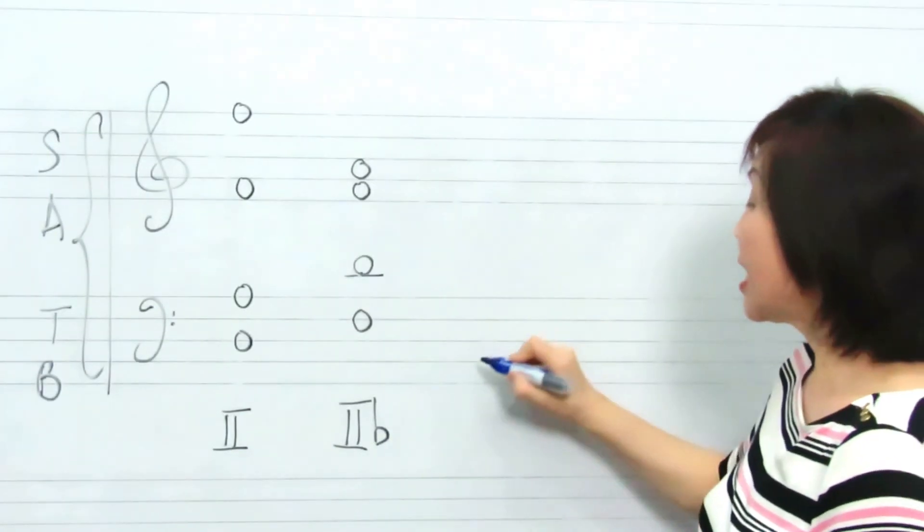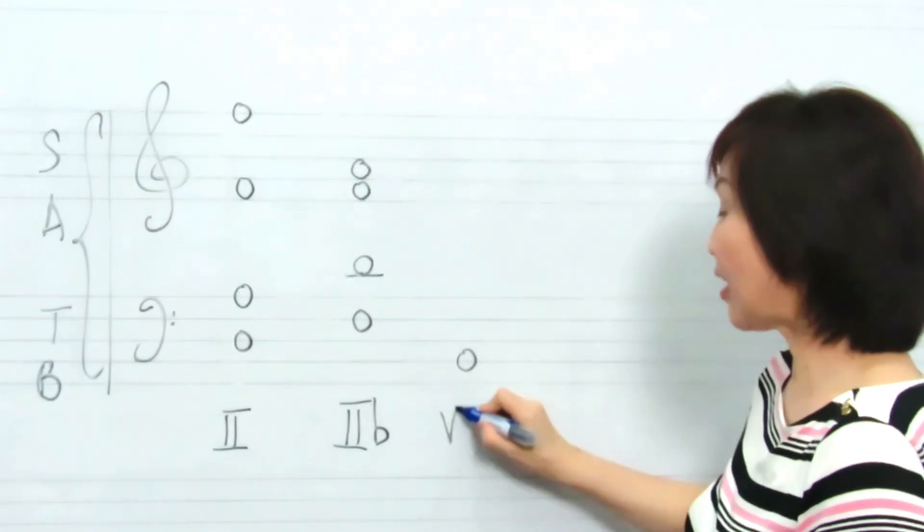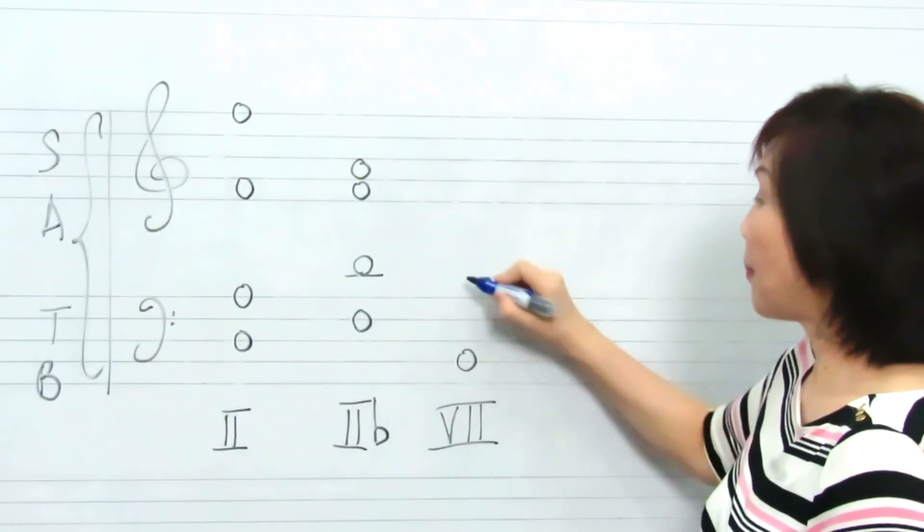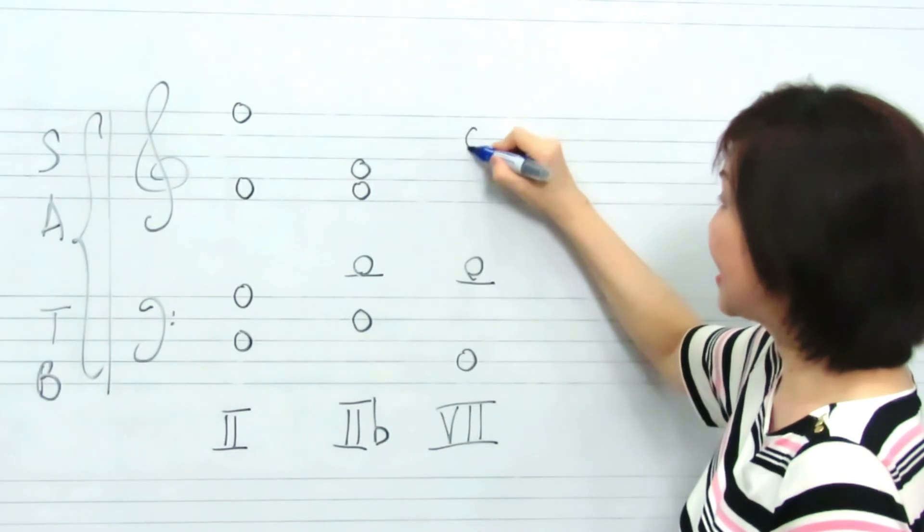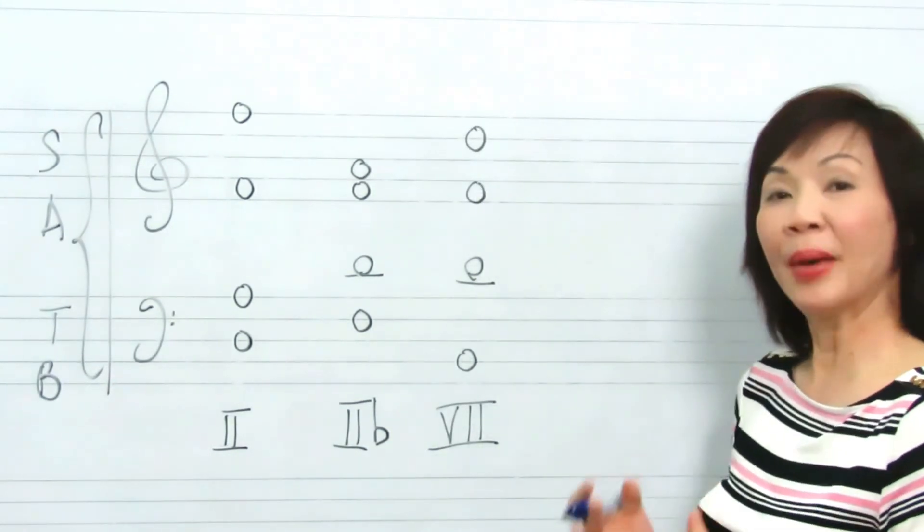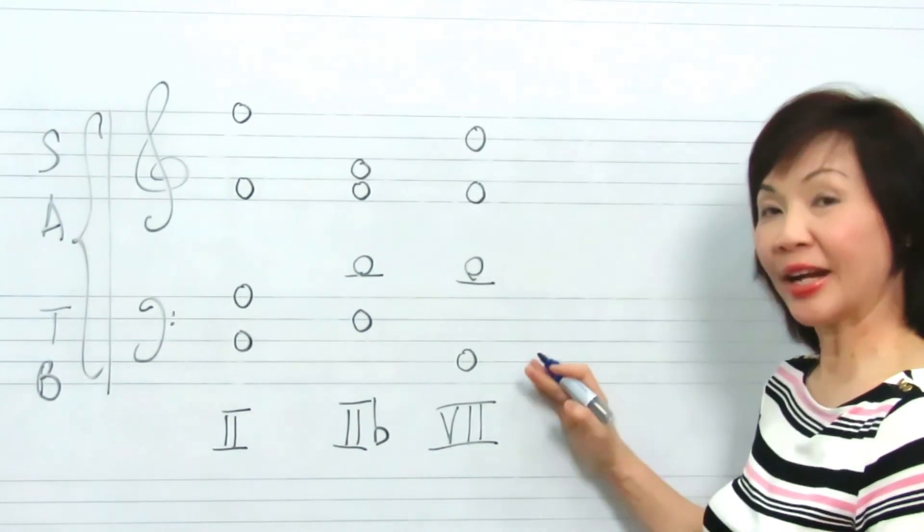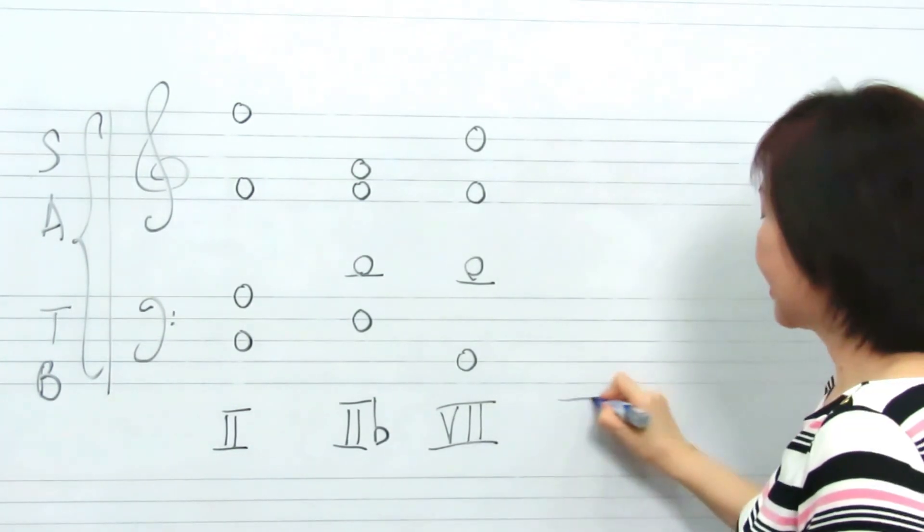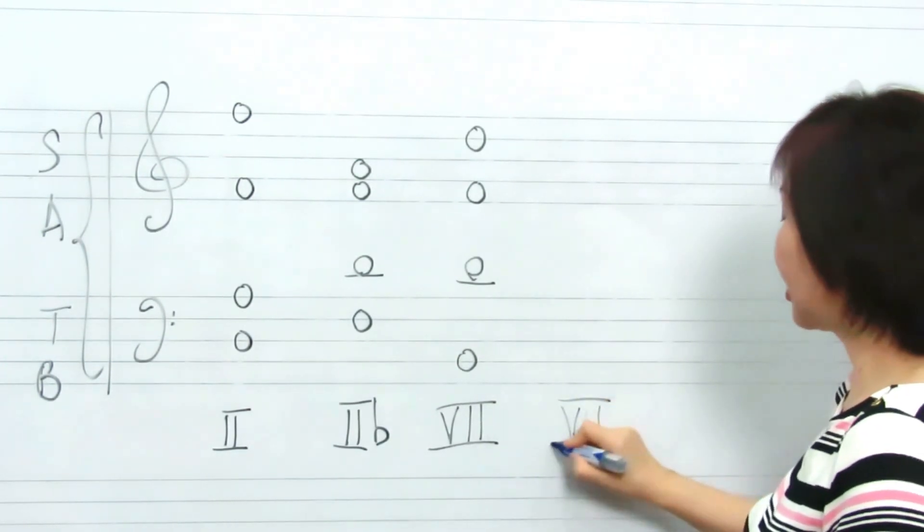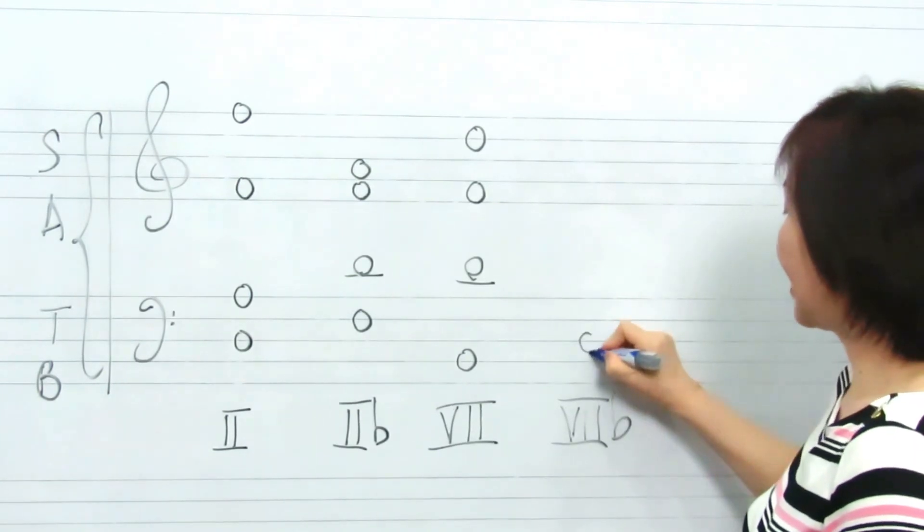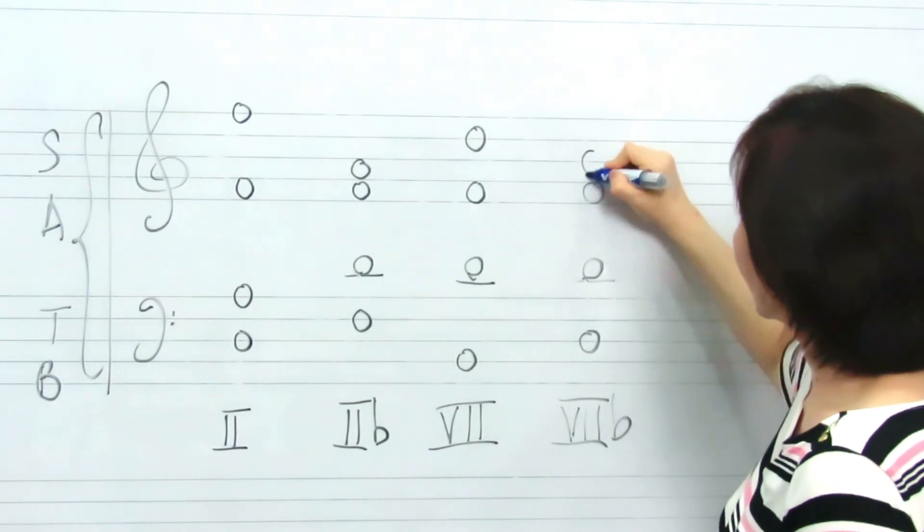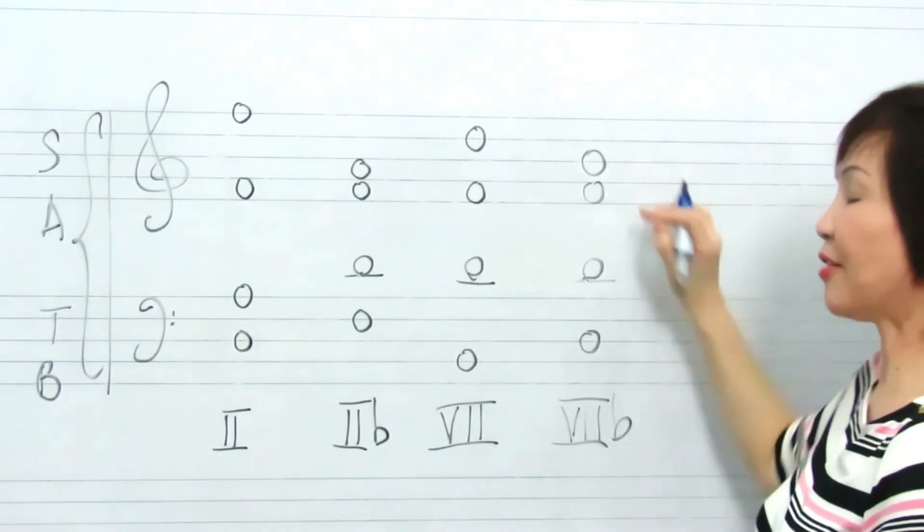A secondary chord, chord 7, can be written like this: B, D, D, F. Bearing in mind, in the leading note triad, the leading note can never be doubled. Similarly, in the first inversion, the leading note chord can be written as B, D, D, F.